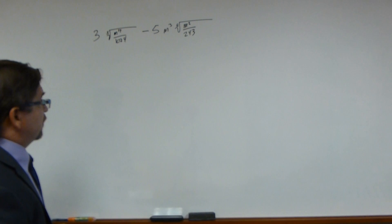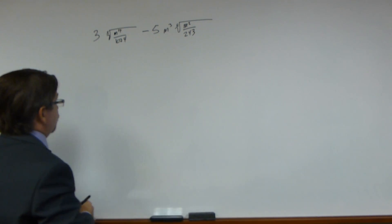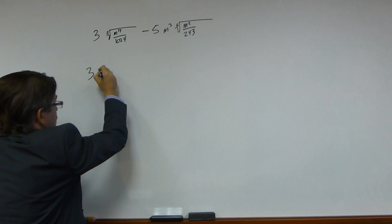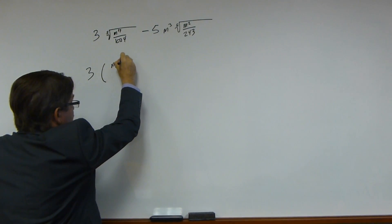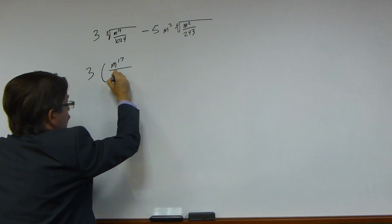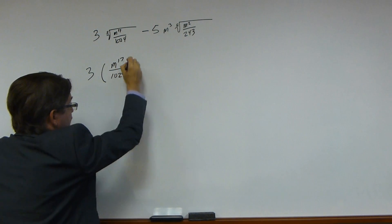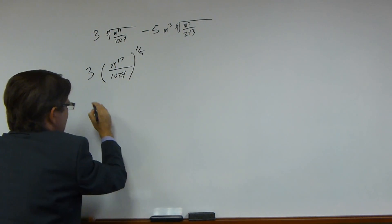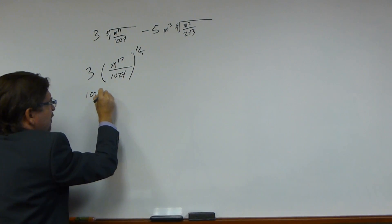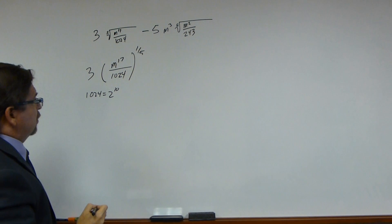So let's first start by simplifying this one. We have three times this quantity, m to the 17th over 1024. That's going to be the same thing as... let's see, that's going to be 2 to the 10th power.